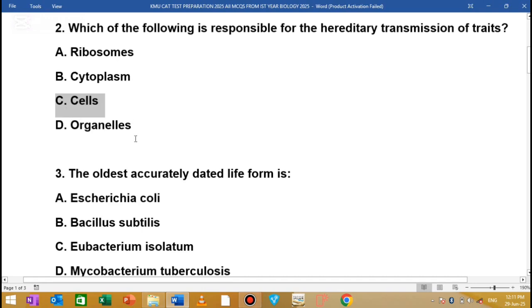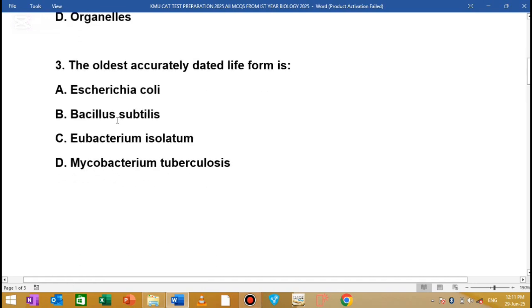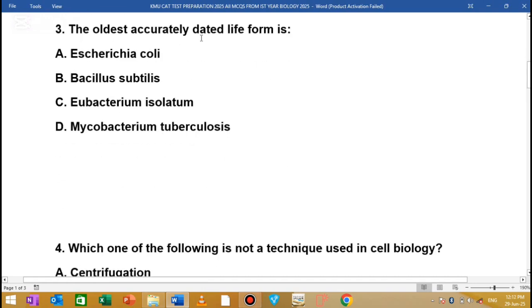Question 3: The oldest accurately dated life form is? Options include Escherichia coli, Bacillus subtilis, Eubacterium isolatum, and Mycobacterium tuberculosis. The correct answer is option C, Eubacterium isolatum.